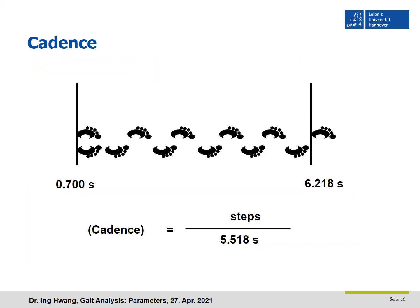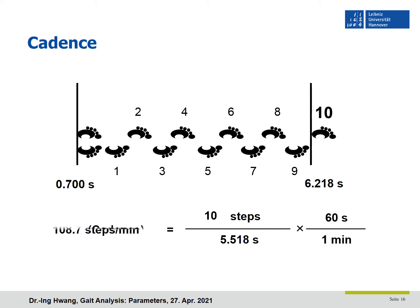The cadence is the number of steps per minute. We count the steps — it is 10 steps — and divide by the walking duration. When we convert the time from seconds to minutes, we have the cadence. The avatar's cadence is 108.735 steps per minute.